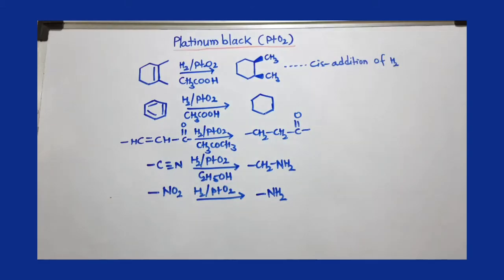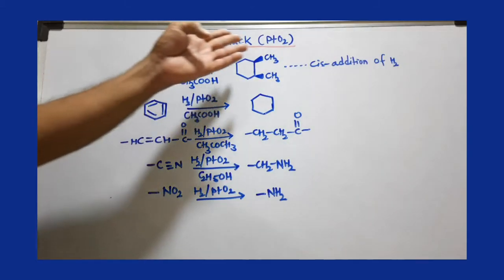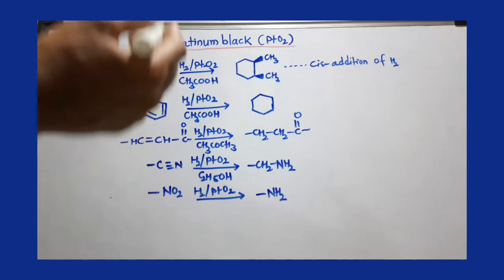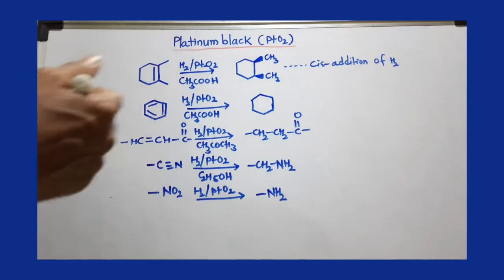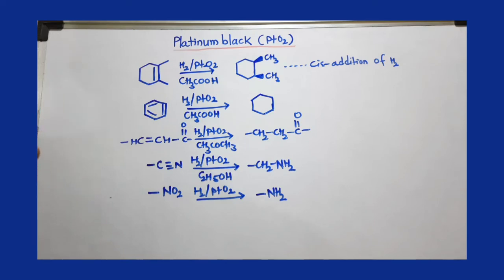Platinum oxide (PtO2) is also called platinum black or Adam's catalyst. This is a very good catalyst for hydrogenation reactions.